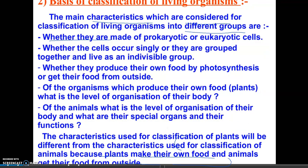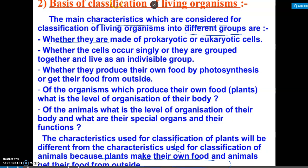Next, let's look at the basis of classification of living organisms. The main characteristics considered for classification include whether organisms are prokaryotic or eukaryotic, whether they occur singly or in groups, and whether they make their own food or are dependent on other living organisms for food. The characteristics used for classification of plants will be different from those used for classification of animals.